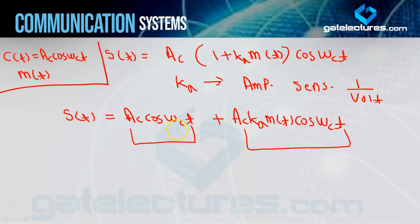This unwanted carrier term is the cause of the problems or disadvantages of amplitude modulation, which we will study later. Now for our complete equation, which we will analyze for amplitude modulation, if I draw the frequency domain spectrum S(F), we will calculate the bandwidth.